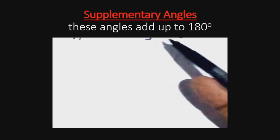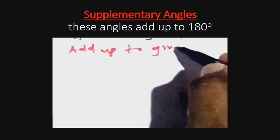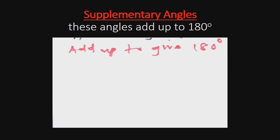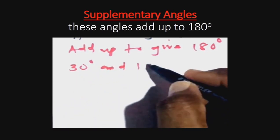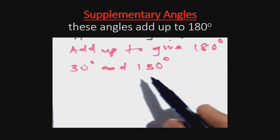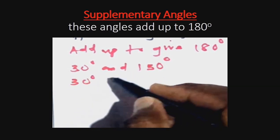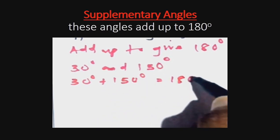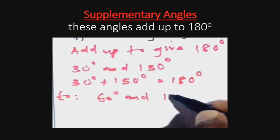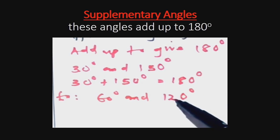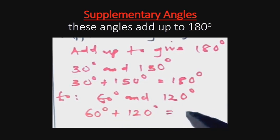The last angle we'll be considering is a supplementary angle. Supplementary angles add up to give 180 degrees. For instance, if we have 30 degrees and 150 degrees, we could say that 150 degrees is the supplementary angle of 30 degrees, because 30 plus 150 gives us 180 degrees. Another example is 60 degrees and 120 degrees: 120 degrees is the supplementary angle of 60 degrees because 60 plus 120 equals 180 degrees.